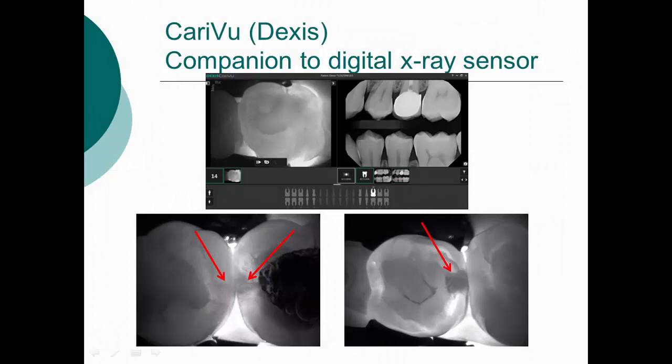The CaryView is a companion to the digital x-ray sensor and software that DEXUS has. It allows us to look interproximally, as you can see on the two lower images, comparing our digital radiograph image with our digital CaryView image. We'll be able to do the same thing using an analog device with a bright light source transilluminator, matching it to radiographs whether film or digital.